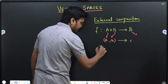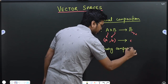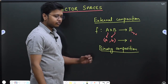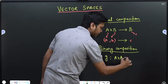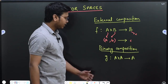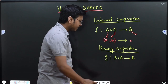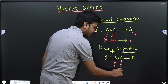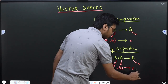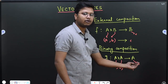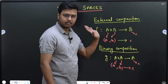We also need binary composition. Suppose I have a function g taking me from the set A cross A to the set A again. Everything is closed inside the set A. If I take element a and element b from A, the cartesian pair (a, b) gets mapped to some element c which also belongs to the same set A — nothing goes outside. This is called binary composition.